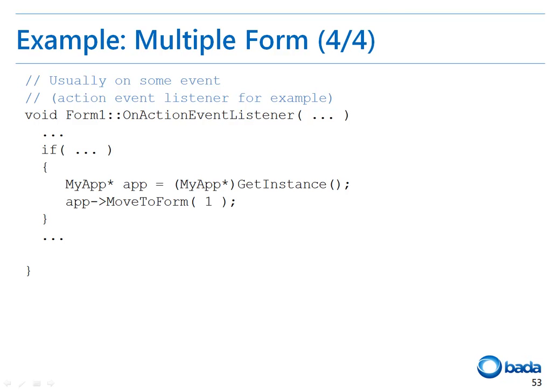In this example, assume that a button has been attached to the form to enable the switching of forms. Then, if the button is pressed, the onActionEventListener function is called. At this time, you can acquire an instance of the application by calling the getInstance function and switch forms by calling the moveToForm function, specifying the next form. However, if you use this method, there can be a memory management problem. So, if you have to use multiple forms, it's recommended that you create a form manager.